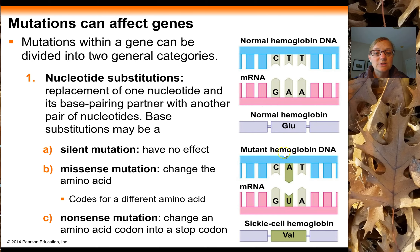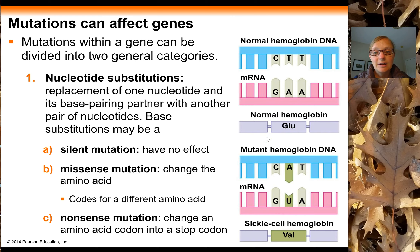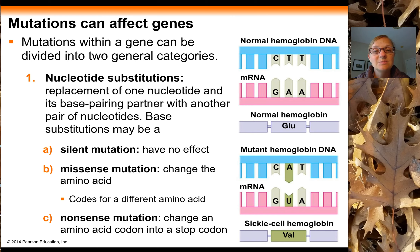In sickle cell, individuals have a single nucleotide change in their hemoglobin DNA. Instead of CTT, they have CAT in the DNA, which changes the RNA codon from GAA to GUA, and that codes for valine instead of glutamic acid. Just that one single nucleotide change translates to one single amino acid change, and that one change causes the protein to misfold and causes disease. That's a missense mutation — substituting one amino acid for a different one.